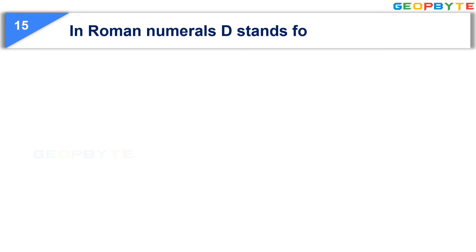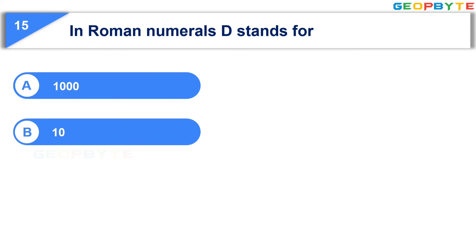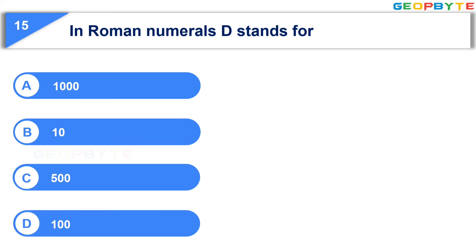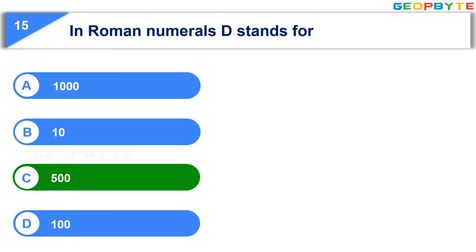The last question is: In Roman numerals, D stands for — Option A: one thousand, Option B: ten, Option C: five hundred, Option D: hundred. Your time is up and the correct answer is Option C: five hundred.